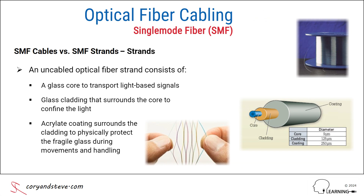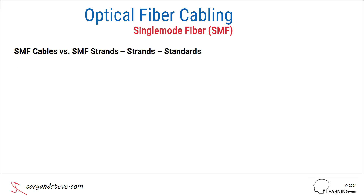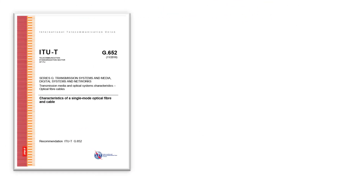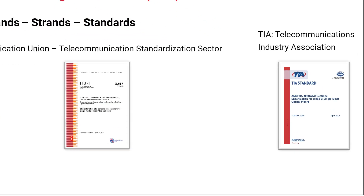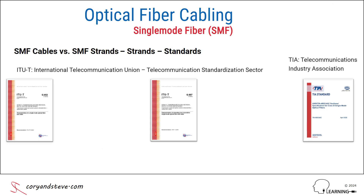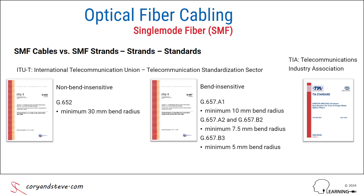We'll finish off this module with an overview of the applicable standards for single-mode fiber, starting with the strands. The telecommunications standardization sector of the International Telecommunication Union, or ITU-T, publishes the G-Series standards for single-mode fiber strands that have been adopted globally. The U.S. equivalent standard is the TIA-492 CAAC. These documents specify the standards for both non-bend-insensitive and bend-insensitive fibers. Standardized fiber strands can tolerate a bend radius ranging from 30 millimeters down to 5 millimeters, and some manufacturers can go even lower, all the way down to 2.5 millimeters.